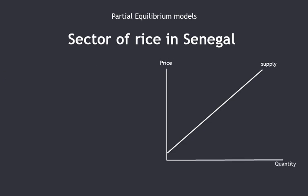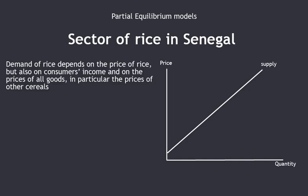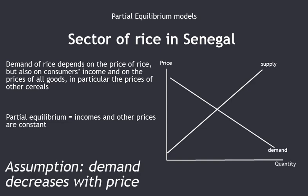Now let us consider demand. We are still studying the rice sector in Senegal. The factors determining demand for rice include its price, but also consumer income and the prices of all goods — in particular, prices of other cereals that can be substitutes for rice. The key assumption of partial equilibrium models is that incomes and other prices are constant, so we can focus on the relationship between demand for rice and its price. Here, demand decreases with price, reflecting decreasing marginal utility.